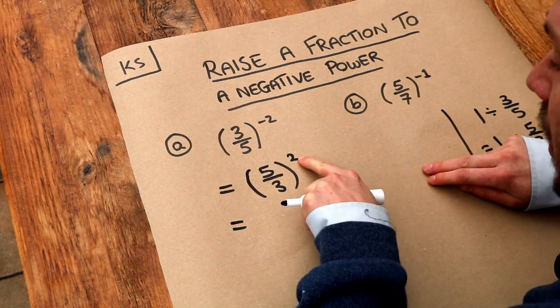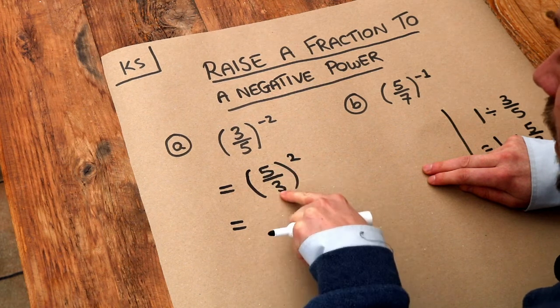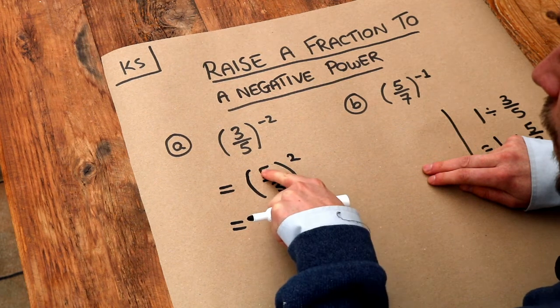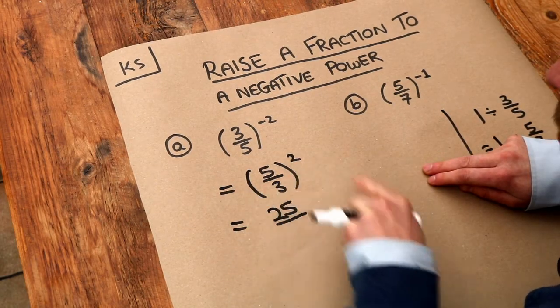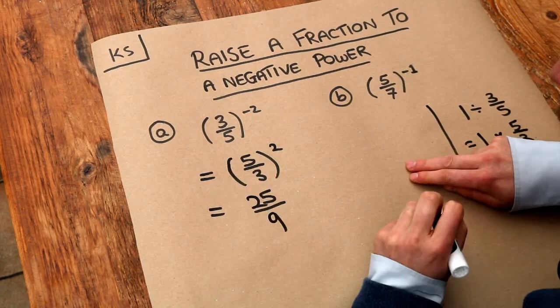Now if we've got the squared here, we can just apply this to the power of 2 to the numerator and the denominator. Now 5 squared is 25, and 3 squared is 9. So that's the final answer.